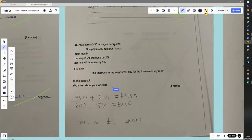Alice earned 450 per month. She pays 200 pound per month in rent. So you can see already, just in my head, I can see what she's got profits of 250, but if I keep reading, I don't think I'll even need that information. Her wages will increase by 2%, her rent will increase by 5%. So how do I do this calculation?